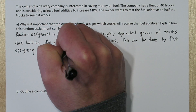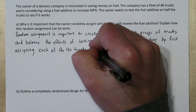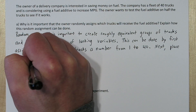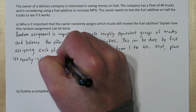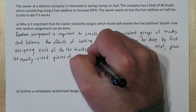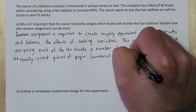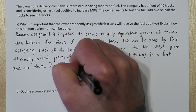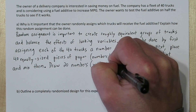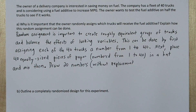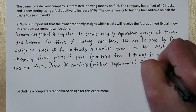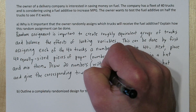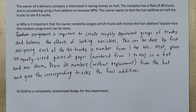This can be done by first assigning each of the 40 trucks a number from 1 to 40. Next, place 40 equally sized pieces of paper numbered from 1 to 40 in a hat and mix them up. Then draw 20 numbers without replacement and use the corresponding trucks to give the fuel additive to.